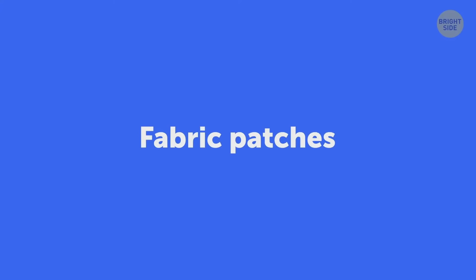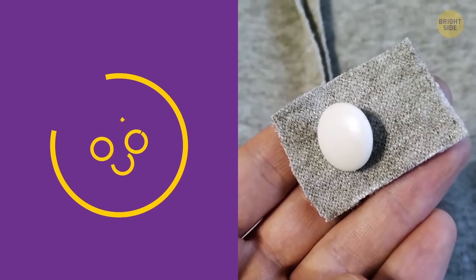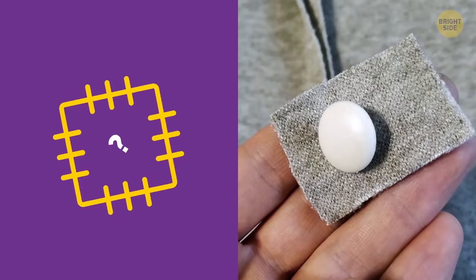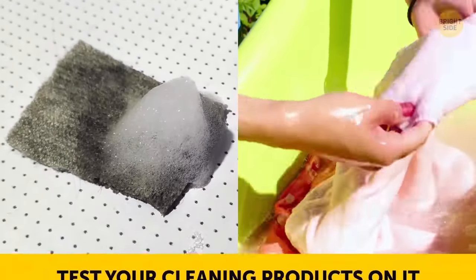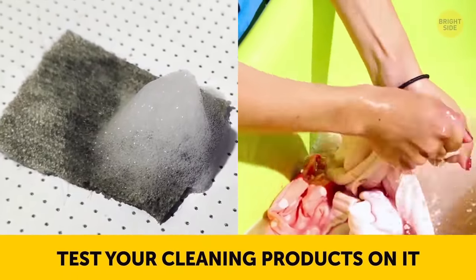Some pieces of clothing come with a small patch of fabric with a button on it. While it's quite obvious how to use the button, the fabric's purpose isn't so apparent. Is it to patch holes? Then why is it so small? Well, you're supposed to test your cleaning products on it. Then, if something goes wrong, you won't ruin the whole garment.